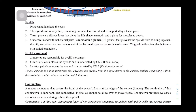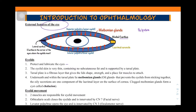Let's look at the eyelids. Their functions are to protect and lubricate the eye. When you close your eyelids, your eyes are protected. They also lubricate the eye by spreading the tears that are released. The tears from the tear ducts are spread evenly throughout the eye by the closing of the eyelid, and that also helps drain them through the lacrimal ducts.